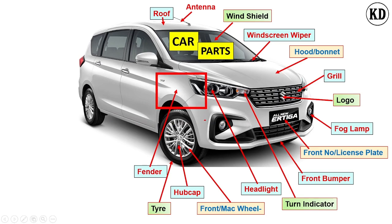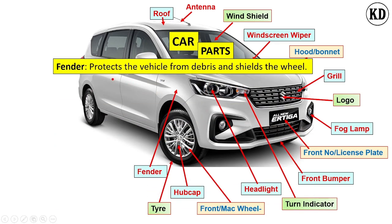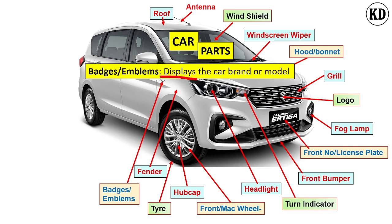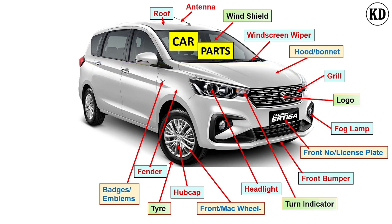The next component name is the fender. The function of the fender is to protect the vehicle from debris and act as a shield around the wheels. The next component is called a badge or emblem. Its function is to display the car brand name as well as the car model name, such as low end, top end, or high end variants.